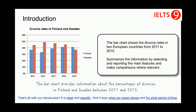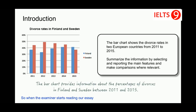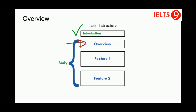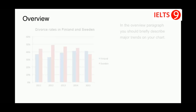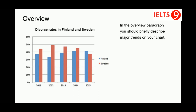That's all with our introduction. It is clear and specific — it says what our graph shows and for what period of time, so when the examiner starts reading our essay, he will quickly get familiar with the bar chart. Now we move on to the second paragraph, which is a general overview. It is a very important paragraph and you must provide the overview to achieve band 6 or more for task 1.